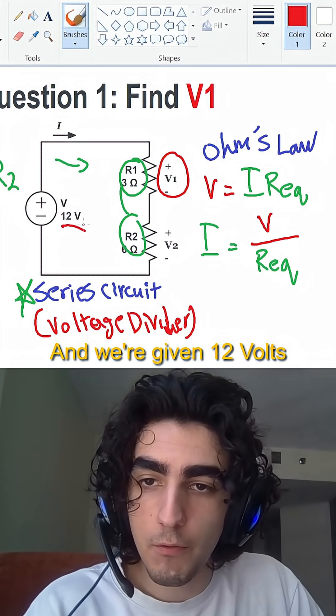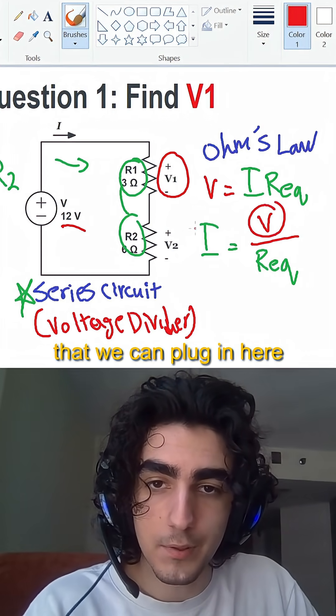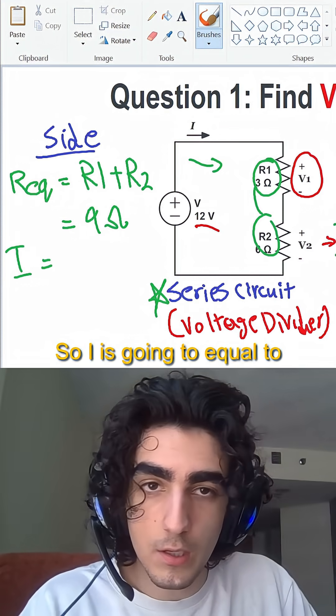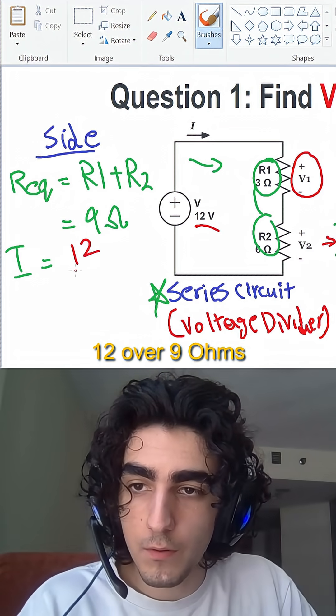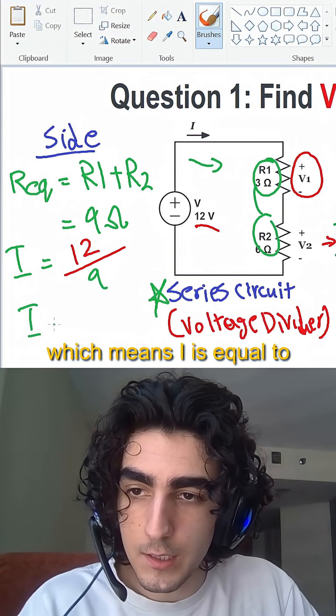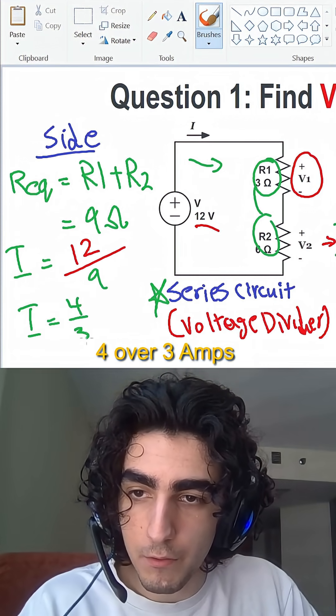And we're given 12 volts for the voltage source that we can plug in here to find I. So I is going to equal 12 over 9 ohms, which means I is equal to 4 over 3 amps.